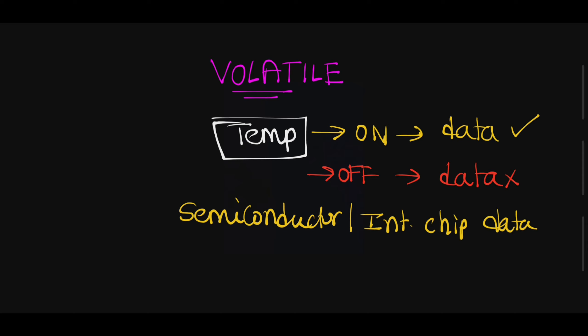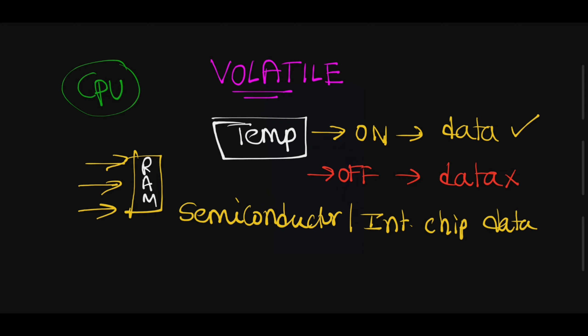If some person is saying a story to you, your brain is listening the data. You won't remember each and every point — you are just listening first. That process is taken by your brain. Similarly, whatever data you are giving to the computer, the data is first taken by RAM. Then this data is taken by the CPU, which holds the instruction or data, after which it is going to be processed.